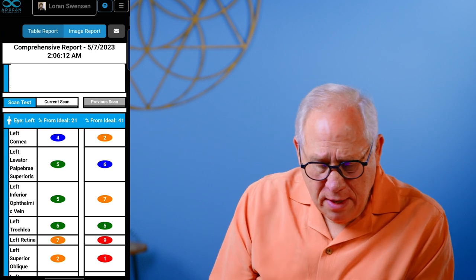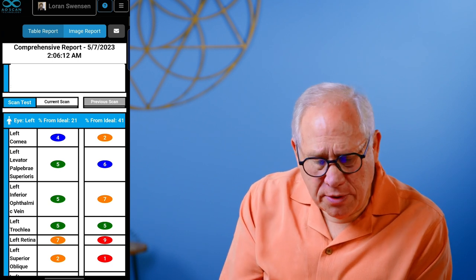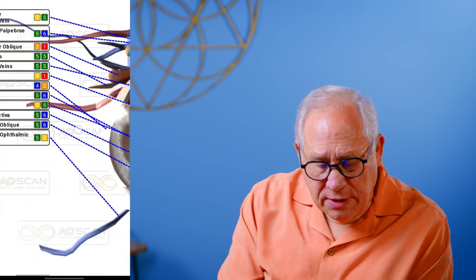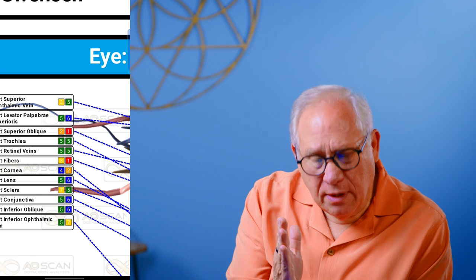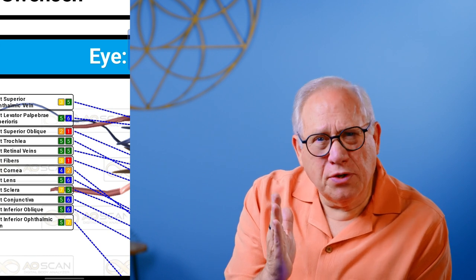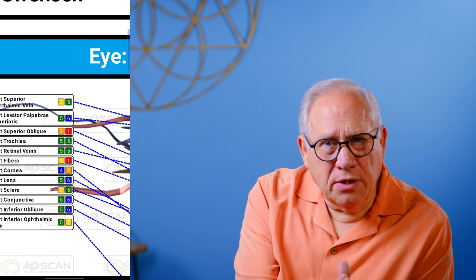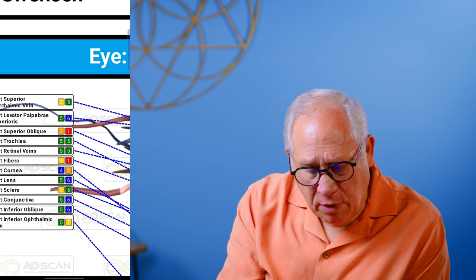If I click on table, it'll show it to you more like what you're used to seeing in your vitals. The numbers on your right are your scanned numbers and the ones to the left will be your optimized numbers. If I go back to image report, it's the same — the box on the right of each item is your scanned number, and the number to the left is your optimized number. The numbering is still the same one to nine, with four or five and six being where you want to be.